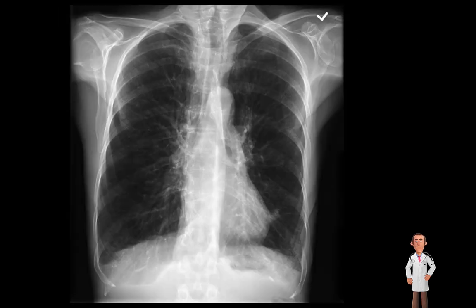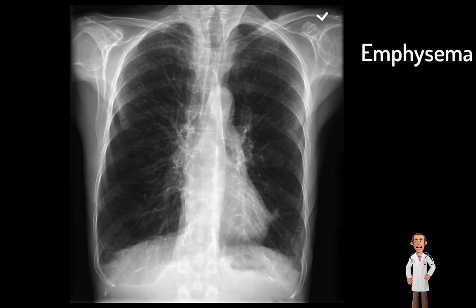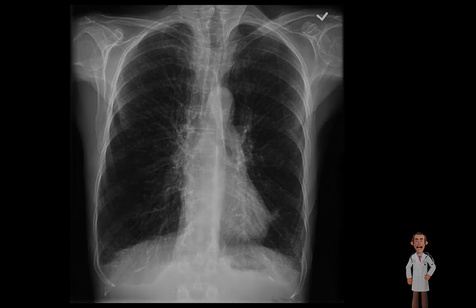Case eight. This chest radiograph demonstrates marked hyperinflation of both lungs. We can see over 11 posterior ribs. The diaphragms are flattened, there is enlargement of the retrosternal airspace, and some prominence of the pulmonary arteries. The most likely diagnosis is emphysema — most likely centrilobular, due to smoking. There are various types of emphysema: centrilobular (the most common), panlobular, paraseptal, and paracicatricial. The prominence of the pulmonary arteries suggests a degree of pulmonary arterial hypertension. In summary, there is unequivocal evidence of marked hyperinflation secondary to emphysema.